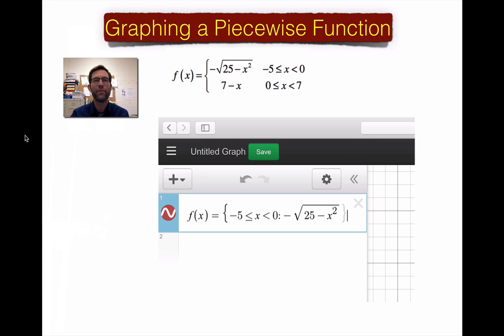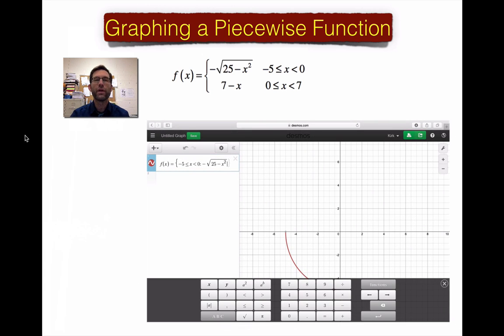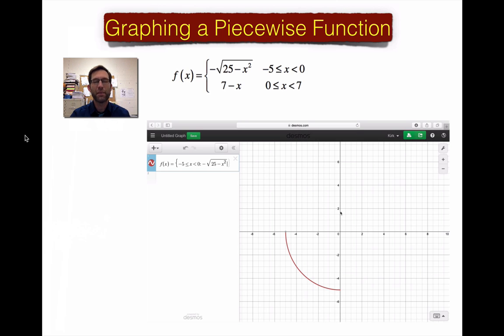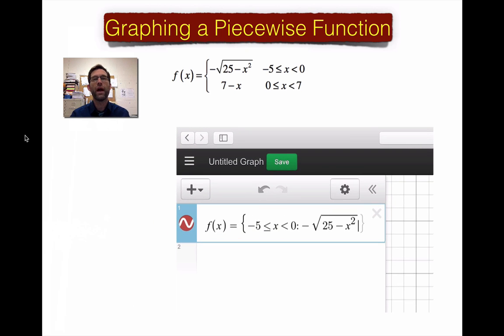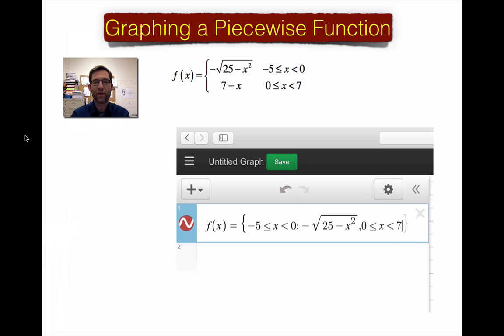And now I'm going to put in negative square root, going back to my Desmos keyboard, 25 minus x squared. That's the first part. And if you look really closely, you can already see that it's graphing that semicircle with a radius of 5, but only from negative 5 to 0. Now how do I put in the other part? I separate the next portion with a comma. And now I have to put the interval back in again. So I'm going to put in 0 less than or equal to x less than 7, colon, and I'm going to type in the formula 7 minus x. I'm just going to end the curly bracket and hit enter.